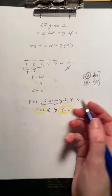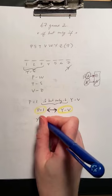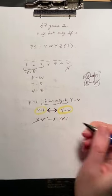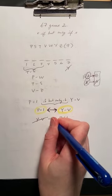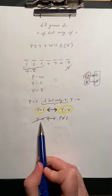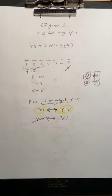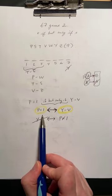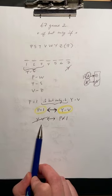The contrapositive would be if Y is not before V, then P is not first, and if P is not first, then Y is not before V. So either both of these things are true, or neither of them are true. Those are our two options.